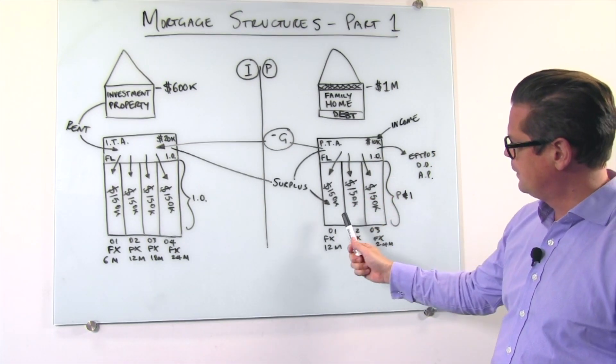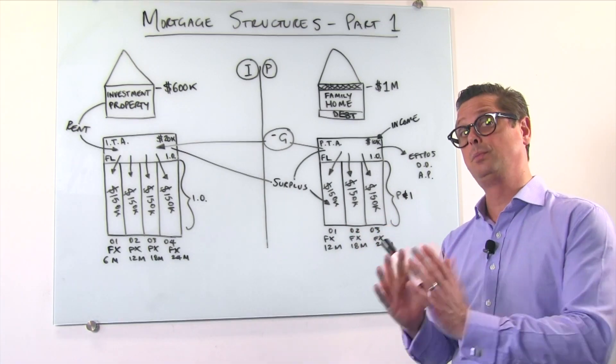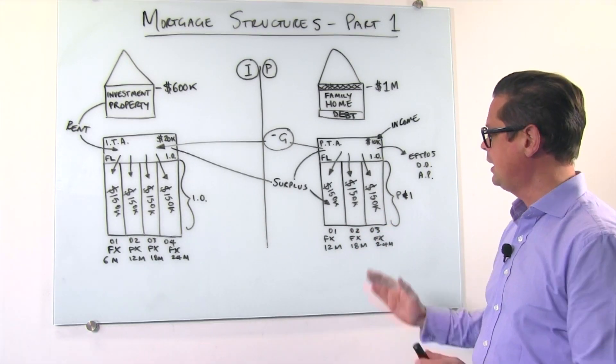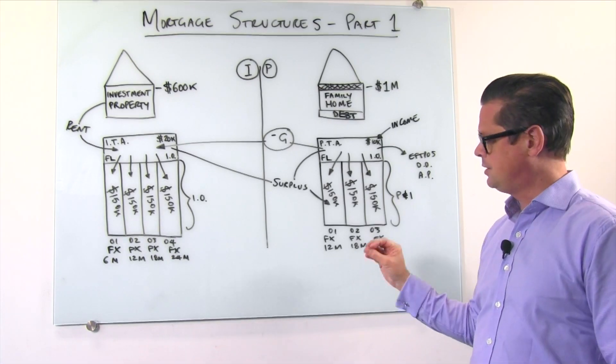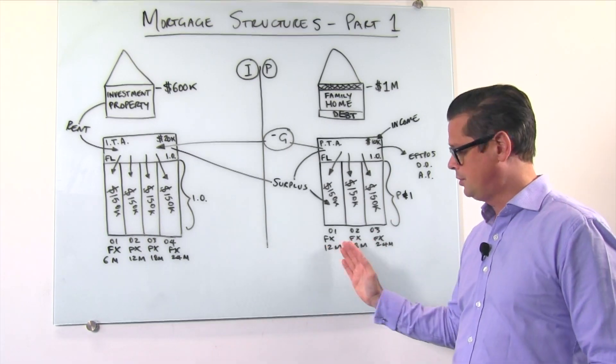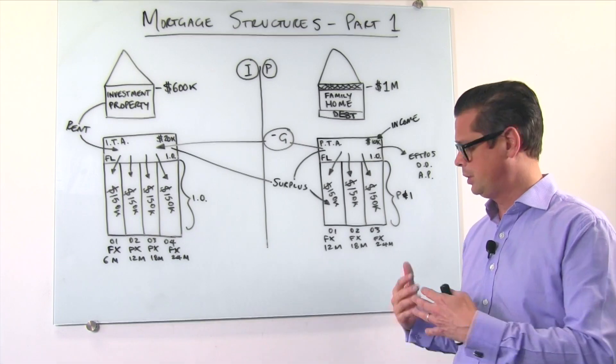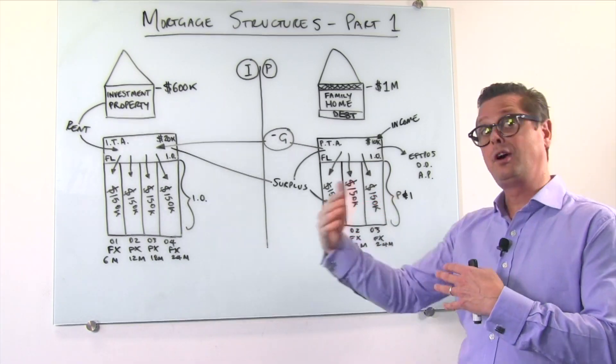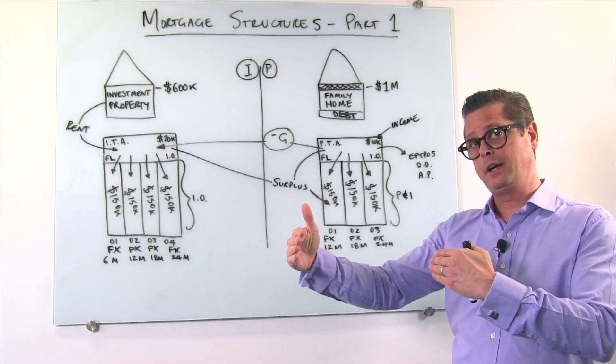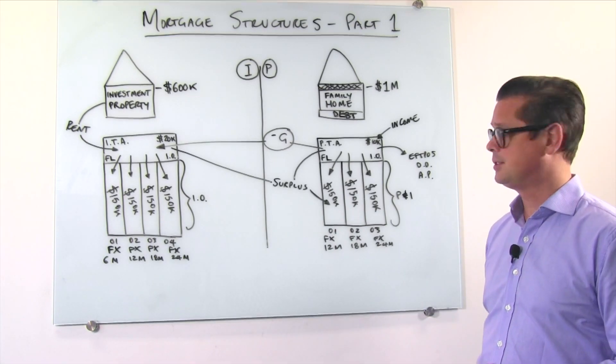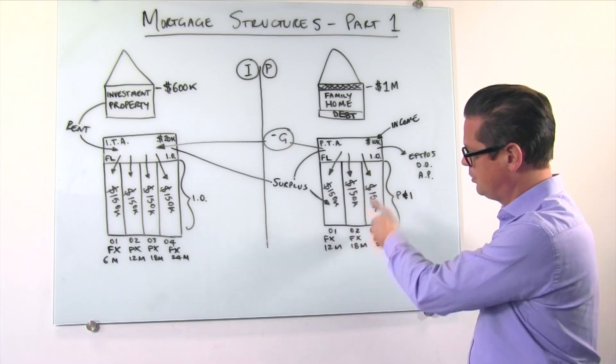Now as you can see we've broken the debt down into smaller increments across different interest rates. Now it really depends where we are in the market as to what kind of rates we would choose but we do err on the side of spreading risk, diversifying across different interest rates as you can see here. Twelve months, eighteen months, twenty-four months.